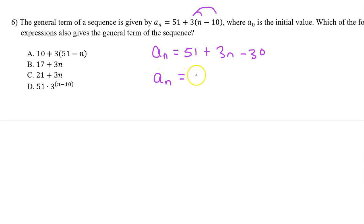So, we get a_n is equal to 21 plus 3n. This is another version of the same rule, and the answer is C.